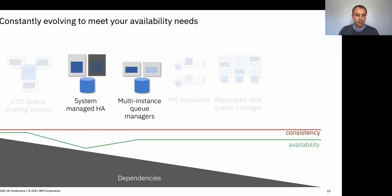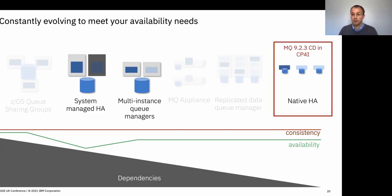RDQM interacts with the Linux kernel so it doesn't fit well in a container. The options that were left prior to a new enhancement were around using shared file system storage, which can be awkward to manage. So we've actually taken the concepts of using replication and built a new feature into MQ called Native HA. We're calling it Native HA because it fits in with the cloud native world and it's built into MQ itself so it doesn't need any external components.